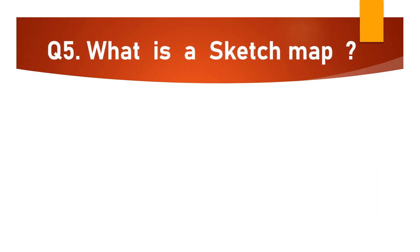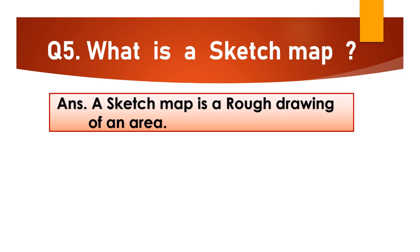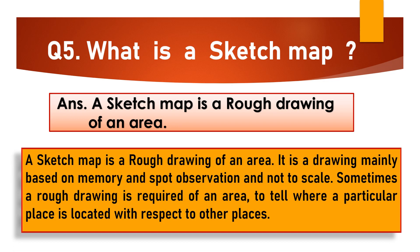Question No. 5: What is a sketch map? A sketch map is a rough drawing of an area. It is a drawing mainly based on memory and spot observation and not to scale. Sometimes a rough drawing is required of an area to tell where a particular place is located with respect to other places.